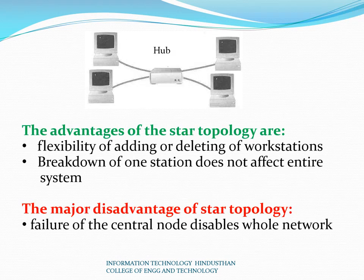Another advantage of star topology is the flexibility of adding systems — we can add any number of systems using the hub. A breakdown of one system does not affect others, because all machines are connected independently from the hub. If any fault occurs in a particular system, only that system is affected; other systems are not affected. The major disadvantage of star topology is failure of the central node — if the hub fails, the entire network goes down.